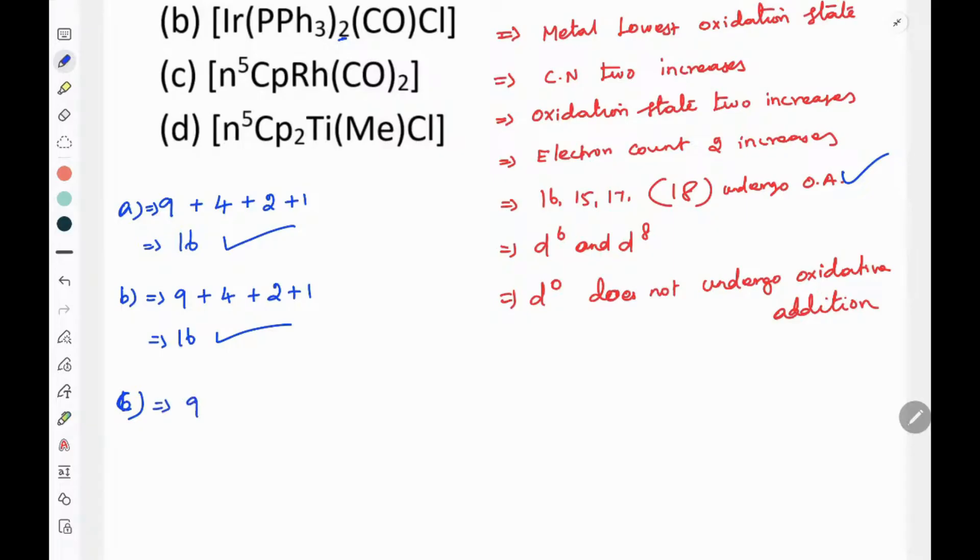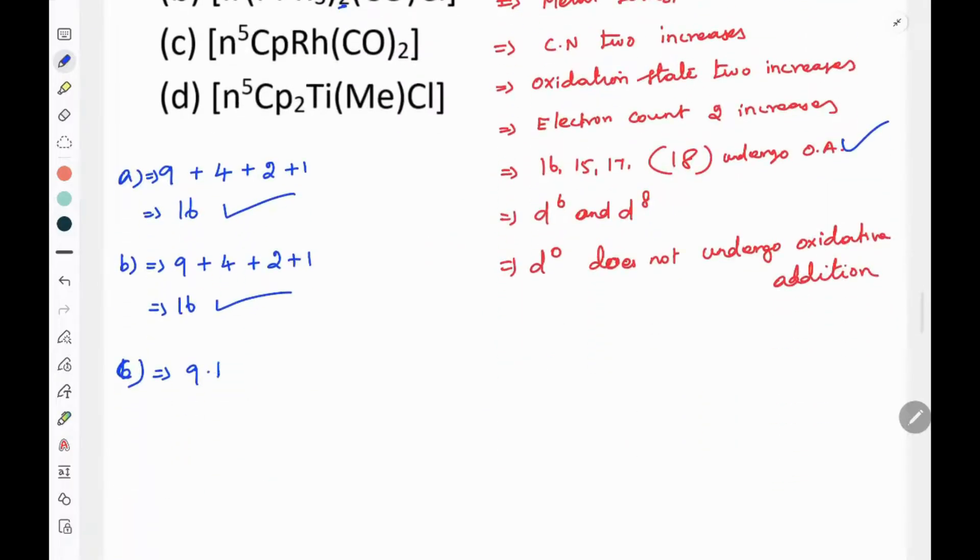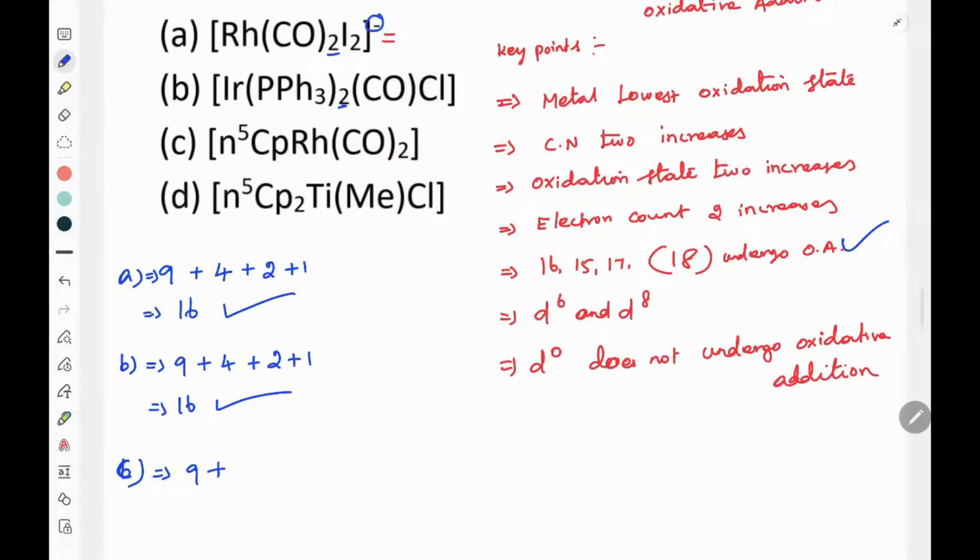The metal here is rhodium, which is 9. Eta-5 cyclopentadienyl - since it's eta-5, there are 5 carbons directly bound to the metal. So eta-5 Cp gives 5 electrons. Now, there's also eta-3 Cp here.